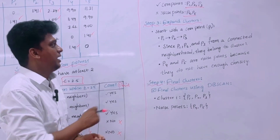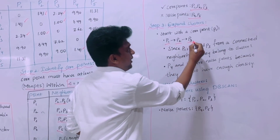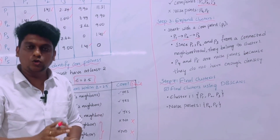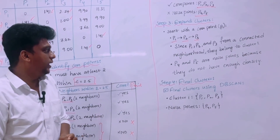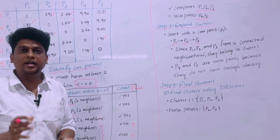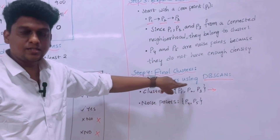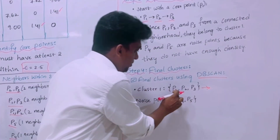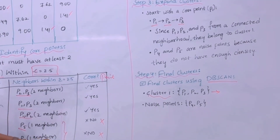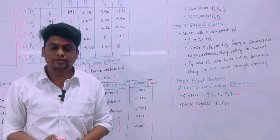In Step 3, we expand the clusters. Starting from core point P1, we connect to P2 and then P3. Since P1, P2, and P3 form a connected neighborhood, they form Cluster 1. P4 and P5 do not have enough density to form a cluster, so they are noise points. In the final step, the result is: Cluster 1 contains P1, P2, and P3; P4 and P5 are noise points. This is how DBSCAN clustering works.